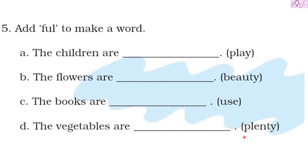This is the exercise: add 'ful' to make a word. We have play, beauty, use, and plenty. The children are... playful. Yes, the children are playful. In this, the word 'play' is a verb, and by adding 'ful' it changed into an adjective which is describing children. The word 'play', originally a verb, has been changed into an adjective by adding the suffix F-U-L.